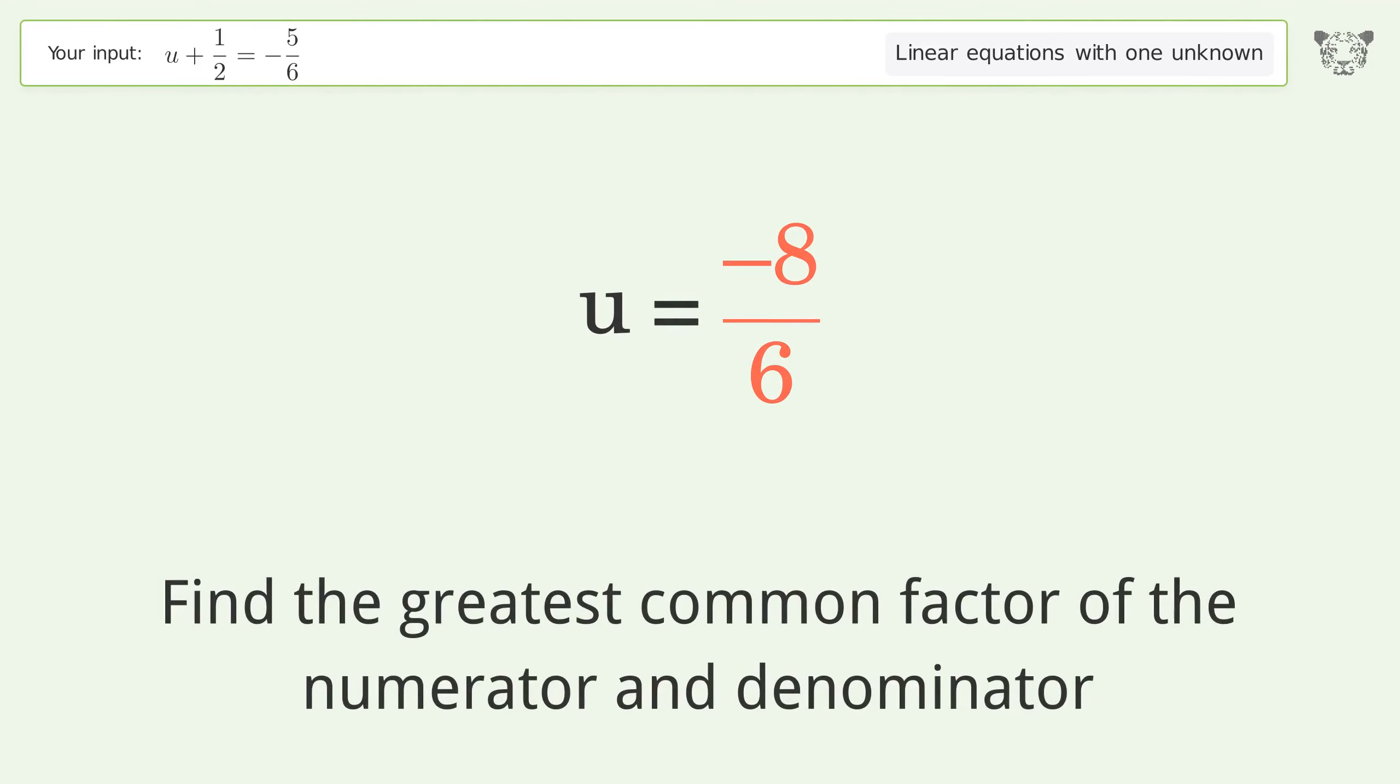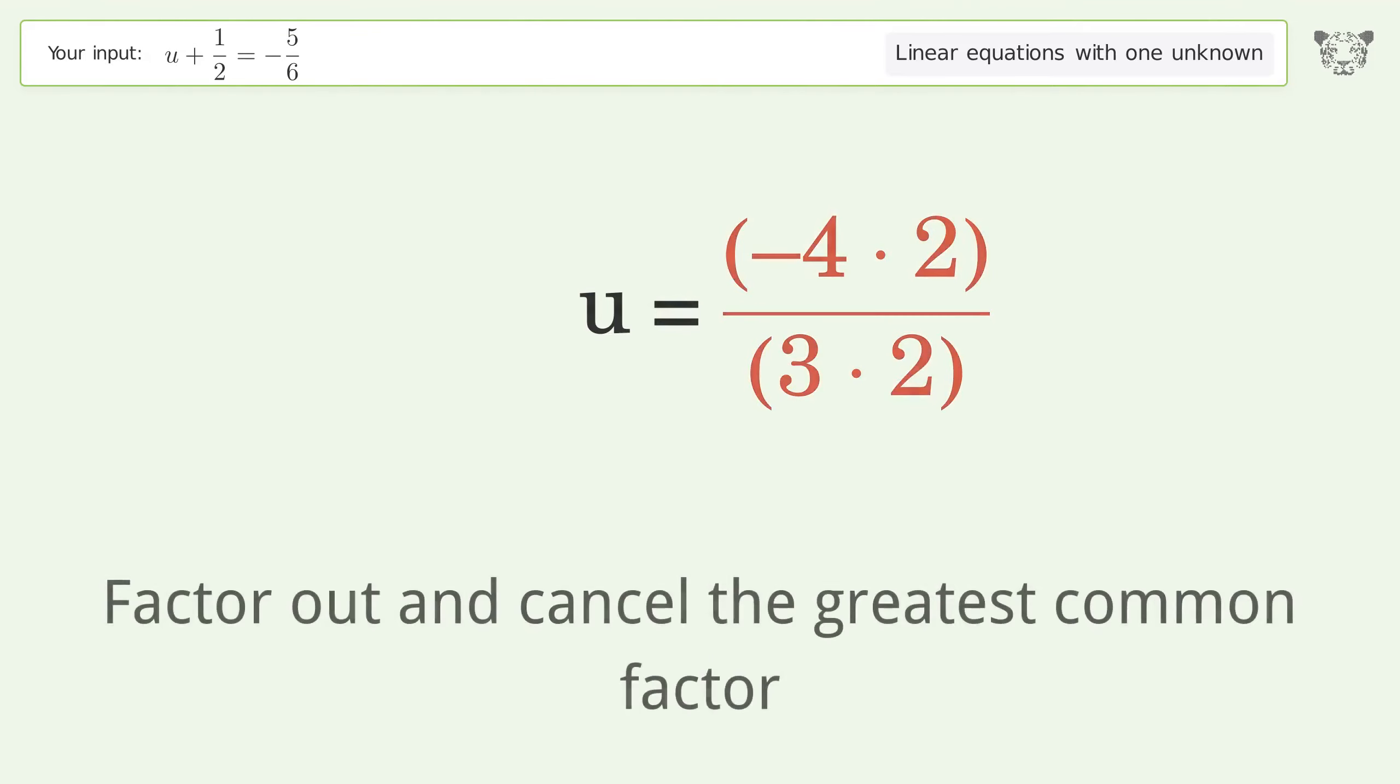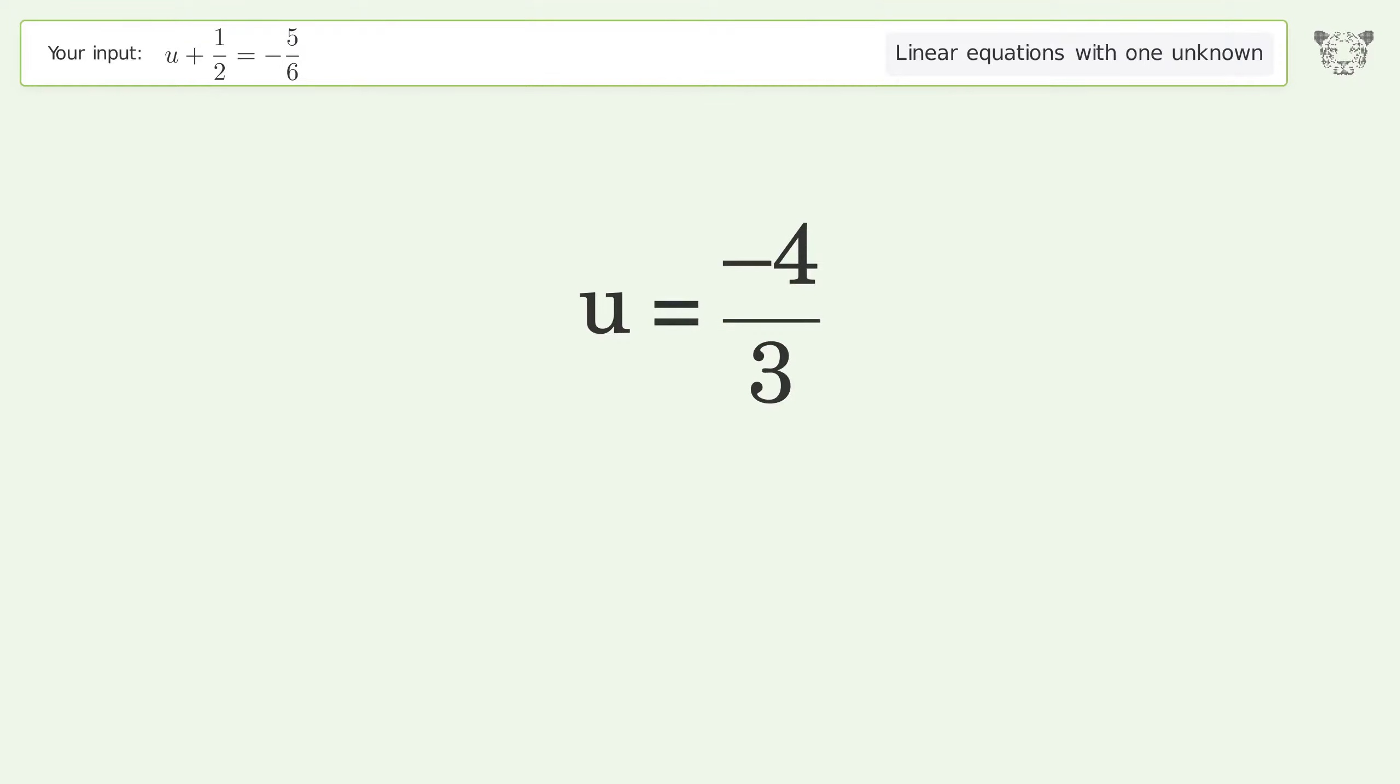Find the greatest common factor of the numerator and denominator. Factor out and cancel the greatest common factor. The final result is u equals negative 4 over 3.